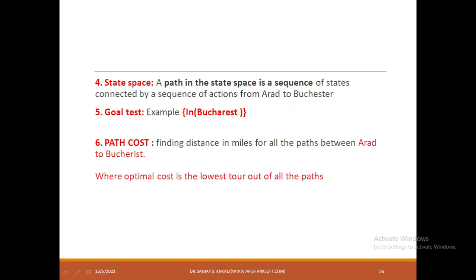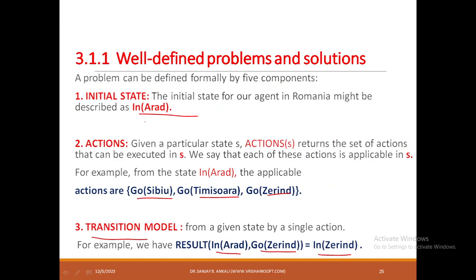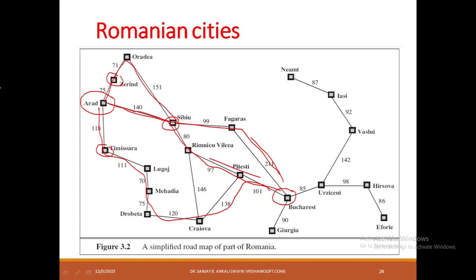The fifth component is the goal test. Once the agent performs an action and reaches a new state, it checks whether that state is the goal state. For example, if the agent moves from Arad to Zerind, it checks: is Zerind Bucharest? No — so it is not the goal state.